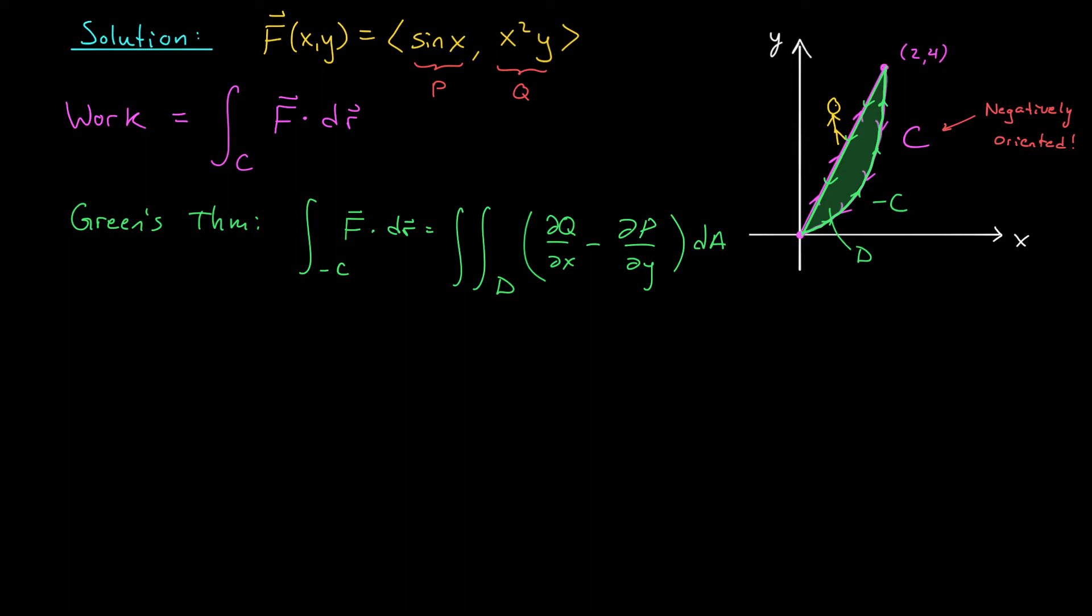Well, ∂P/∂y, that's just zero. And ∂Q/∂x, that's 2xy. So we've identified our integrand. We just need to figure out the bounds on this double integral. The region D is of both type 1 and type 2. We could set up our bounds in either order. I'm going to choose type 1. If I draw an arrow pointing upward through this region, you can see that y is going to extend from x² to this line here, which is y = 2x, and all the while x is going from 0 to 2.